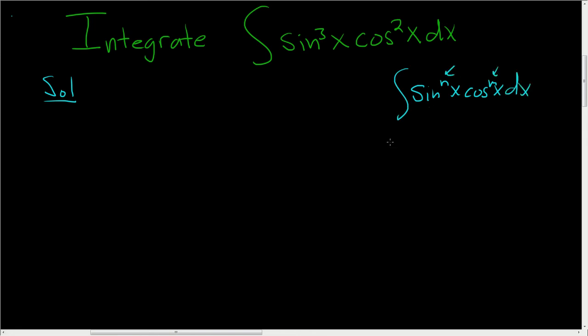The trick is to save a copy of the function that's being raised to an odd power. By odd one, I mean the one being raised to an odd power. In this case, the sine function is being cubed, so we'll save a factor of sine.